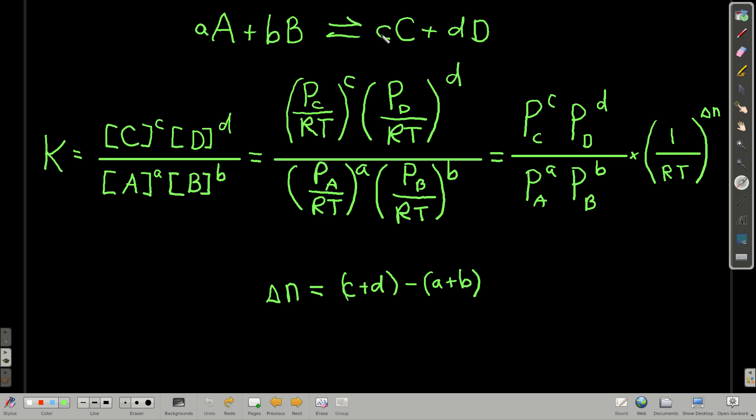All this delta n is, it's the change in the number of moles of gases. So the number of moles of C plus the number of moles of D that we make, or on the product side, minus the moles of A plus the moles of B. So delta n.